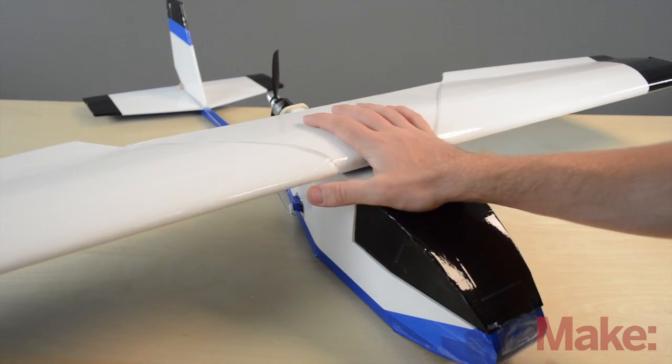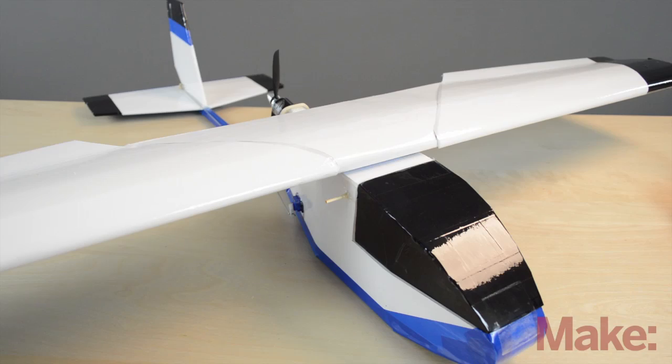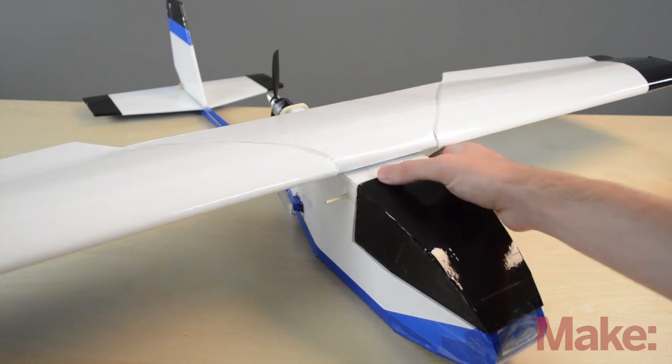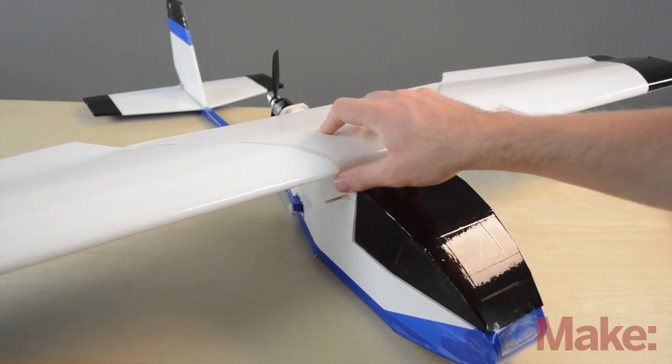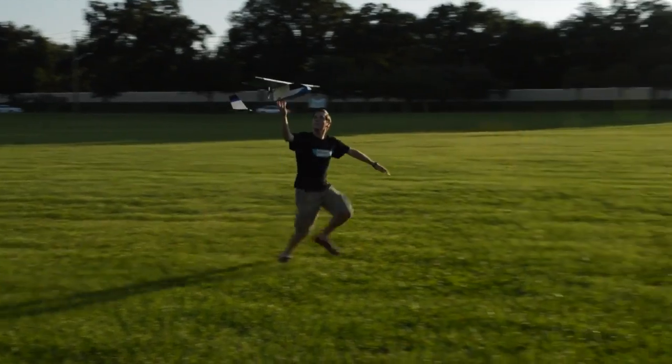So the way that I normally do this is I put the battery in and then I go outside and I hold this over my head and I go running with it. And then when I'm running at a fast enough speed and then I feel that it's getting lift, then I let go and see what it does. I always keep my hand next to it so it doesn't fall.